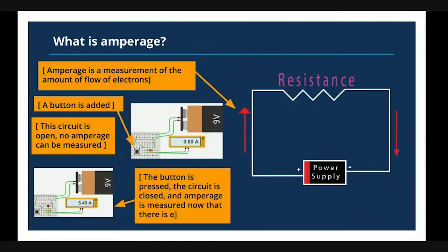Amperage is the amount of electrons that can flow. So if electrons are exiting from the positive terminal of the power supply, there will be a higher current. As soon as it hits the circuit, resistance is going to lower the amperage — it's harder for that many electrons to travel through the resistance of that circuit. When the electricity returns to the negative terminal, the current will have dropped and the amperage will be lower; there will be fewer electrons.